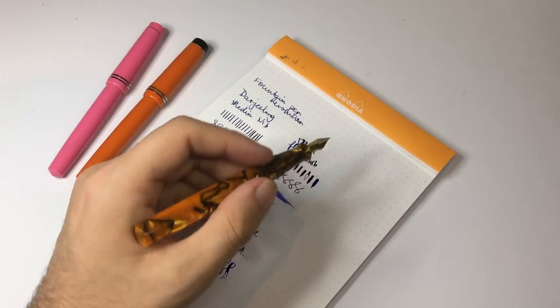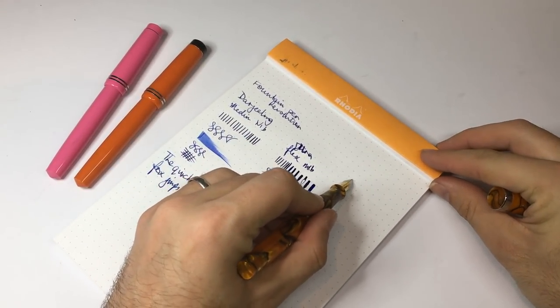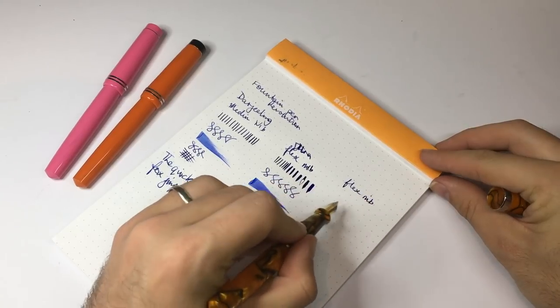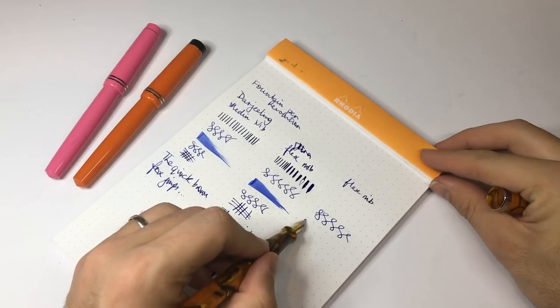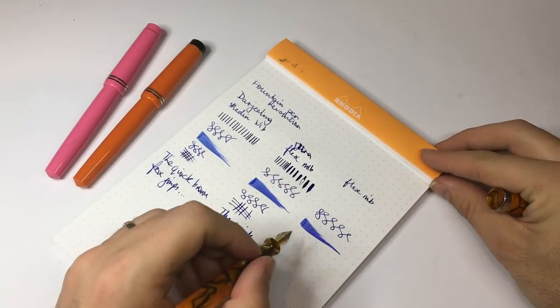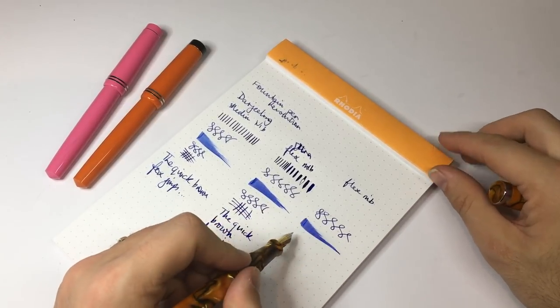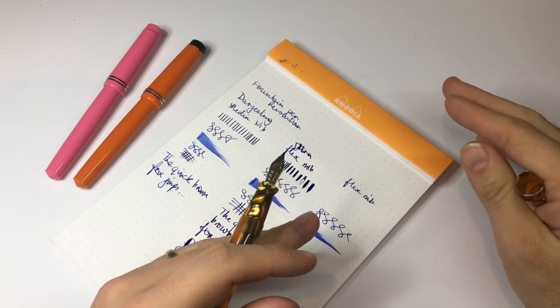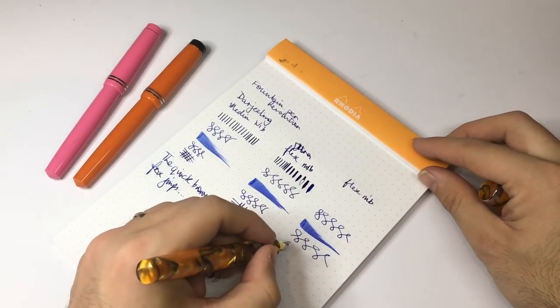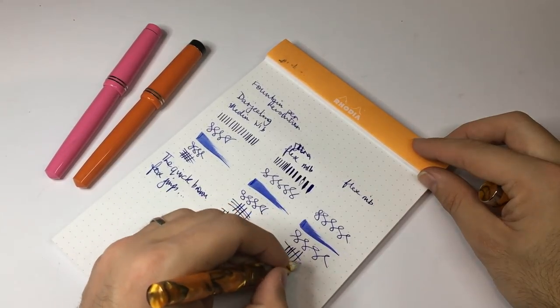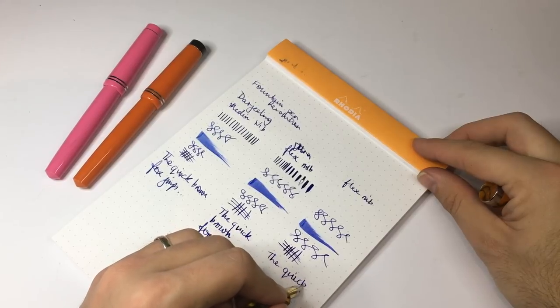So this is just the flex nib. And once again very smooth, a little bit of feedback but smooth, wet. It writes quite nicely. These feeds are tuned for extra flow, they're slightly more open than a regular feed, so they do allow for a lot of ink to sort of come down.